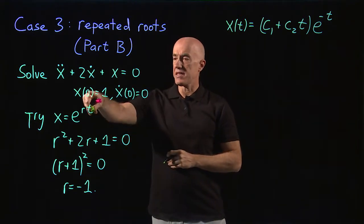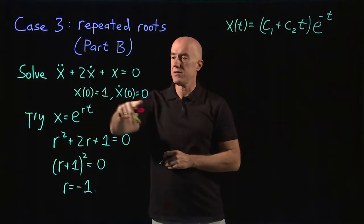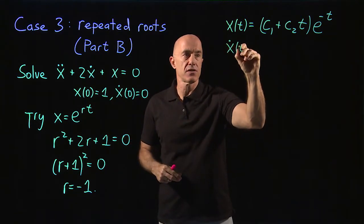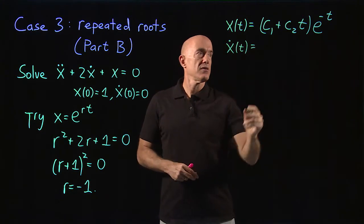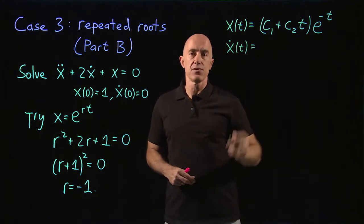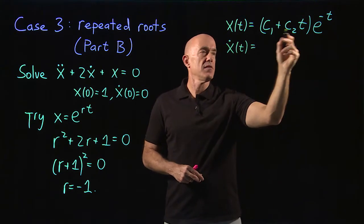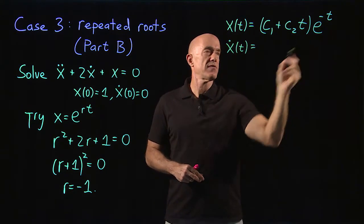Now we need to satisfy the two initial conditions, so we need the derivative. What is the derivative of this function? We're going to have to use the product rule, the derivative of the first times the second plus the first times the derivative of the second.